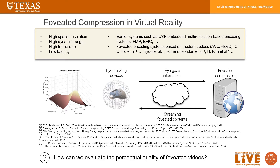In recent years, to remedy these challenges, foveated video compression and streaming is regaining interest. These systems usually include a displaying device with eye-tracking integration, upstreaming of gaze directions, foveated compression on the server side, and downstreaming of foveated contents to client display devices. There have been several systems in this field, including early multiresolution pyramid systems based on contrast sensitivity functions, and recent efforts adapting foveated compression into modern codecs such as AVC or HEVC.